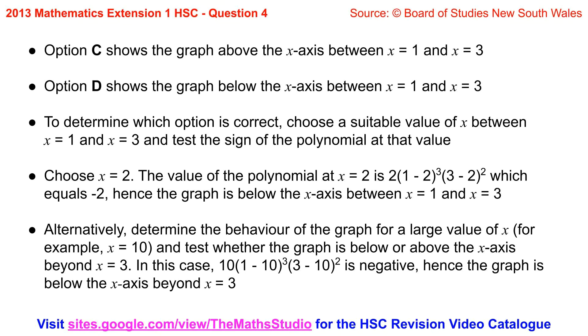Option C shows the graph above the x-axis between x equals 1 and x equals 3. Option D shows the graph below the x-axis between x equals 1 and x equals 3.